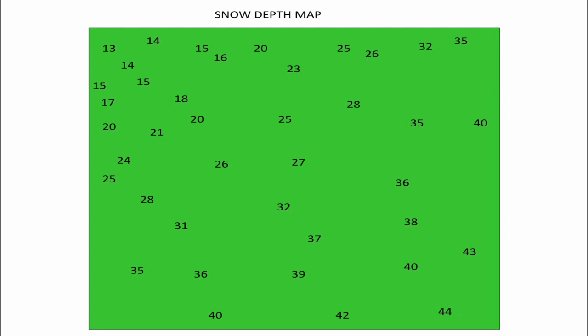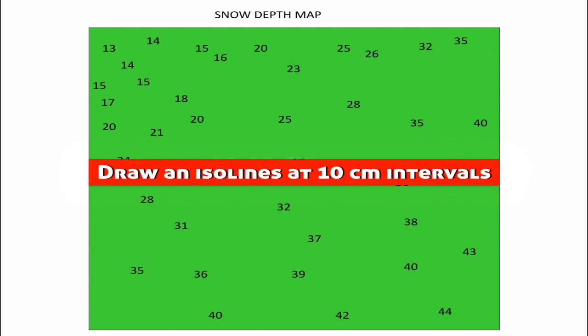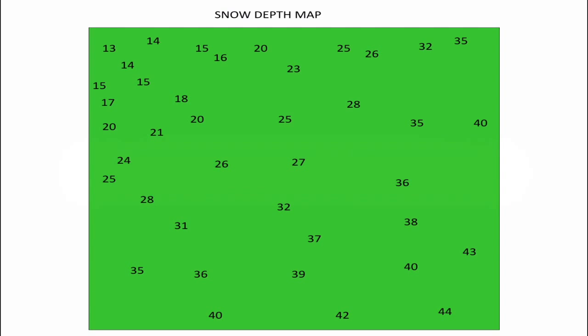And one more. This is a map of snow depth. And what we want to do is draw isolines at 10 centimeter intervals. So in order to do that, this is a little bit more difficult because the data doesn't go by 10s. So if we were going to start with a line equal to 10 centimeters, these are depths in centimeters, my first line would have to be here. Why? Because 13 is greater than 10. So I'd have to draw a line representing my first field value of 10 or my first isoline of 10.